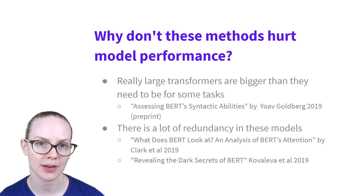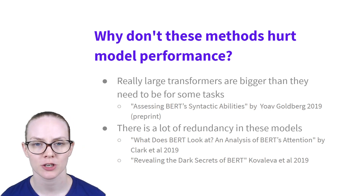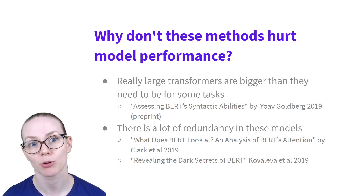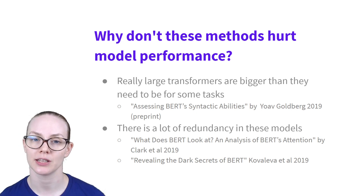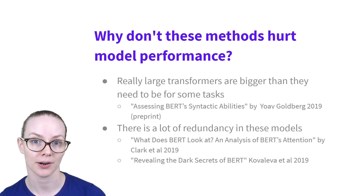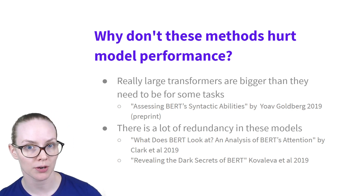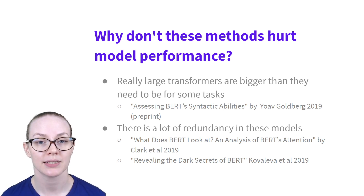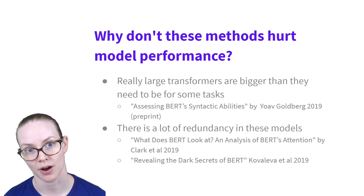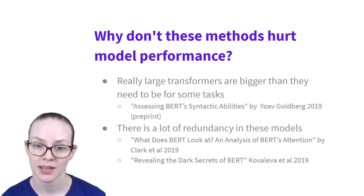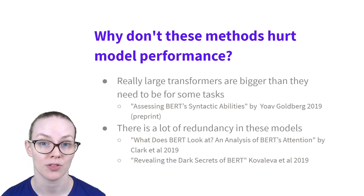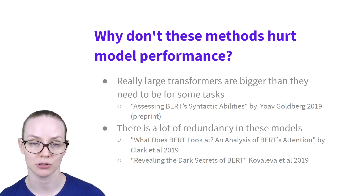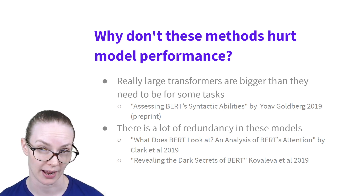So why don't these transformations to make the model smaller hurt performance? There's been a trend in NLP, computer vision, and deep learning research that larger models trained with more data tend to do better. But this is an active area of research, and some things emerging from work on BERT suggest that really large transformers might be bigger than they need to be — they may have more parameters than needed to do specific tasks, so we might call these over-parameterized.